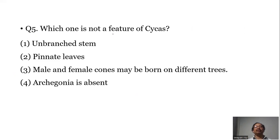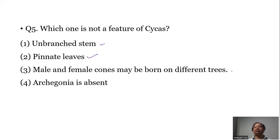Question number five: Which one is not a feature of Cycas? Unbranched stem — this is a feature of Cycas. Pinnate leaves — this is a feature of Cycas because the leaves are pinnately compound. Male and female cones may be borne on different trees — this is also a feature of Cycas because trees are dioecious, so male plants bear the male cone and female plants bear megasporophylls that do not form a cone.